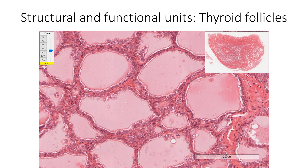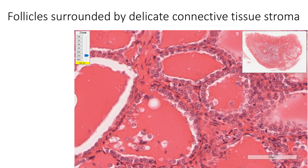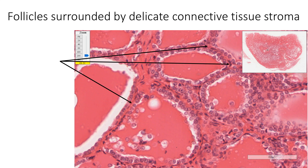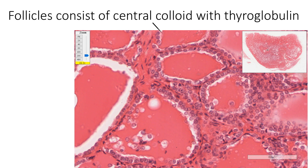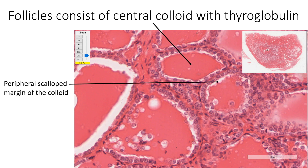Under the microscope, we see that the structural and functional unit of the thyroid gland are the spherical cyst-like thyroid follicles, which vary in their size from 0.2 to 1 mm in diameter. Each follicle is surrounded by a delicate network of connective tissue stroma containing fenestrated capillaries, lymphatics, and sympathetic nerves. Each follicle consists of eosinophilic homogenous colloid in the center which contains thyroglobulin. The periphery of the colloid in some follicles may show a scalloped margin — these are the sites where the follicular cells have utilized the thyroglobulin.